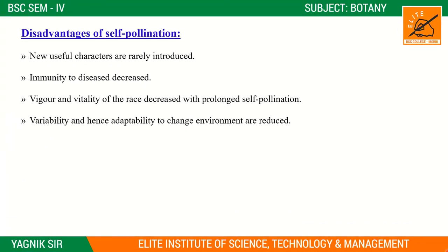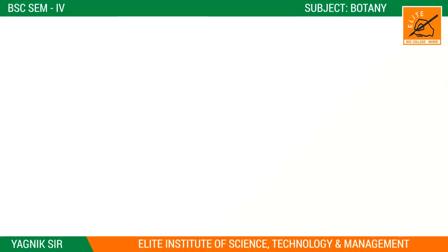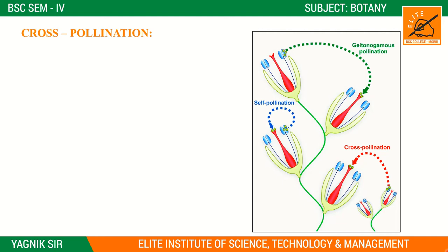No new useful characters are rarely introduced through self pollination — new characteristics cannot come in. The vitality of the race decreases, and variability and adaptability to change are reduced. These are all the disadvantages of self pollination.